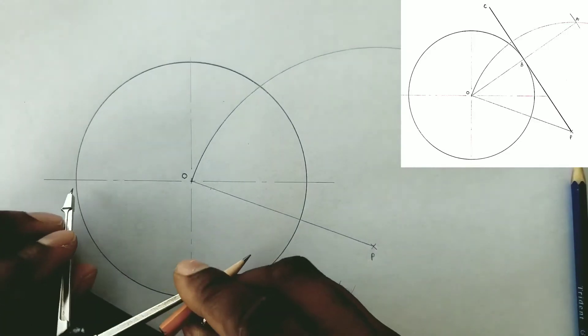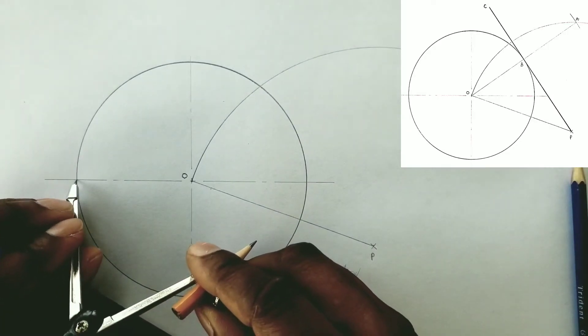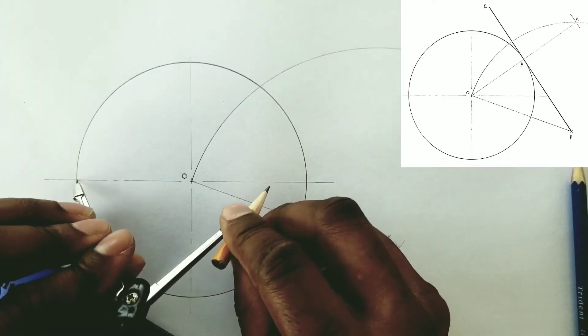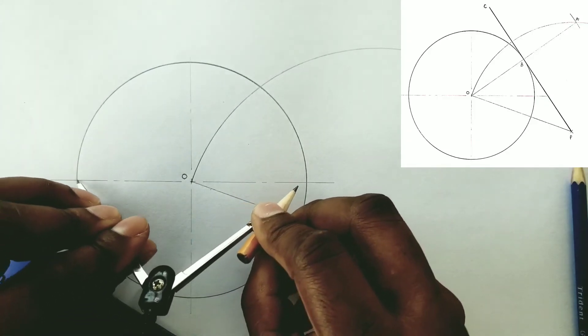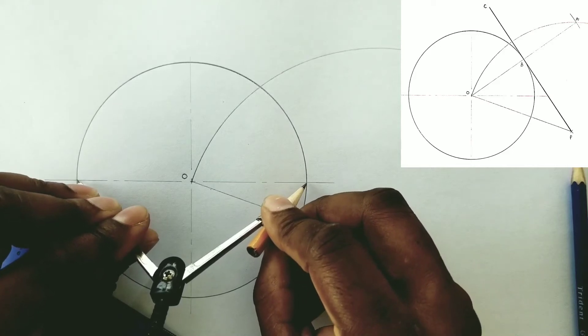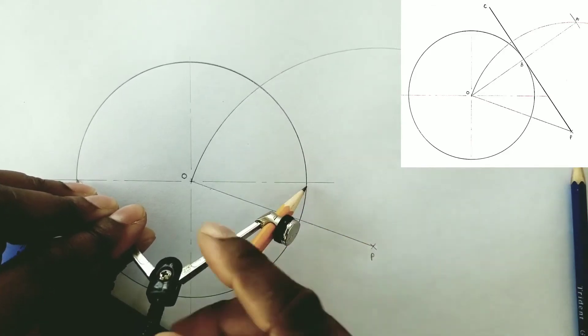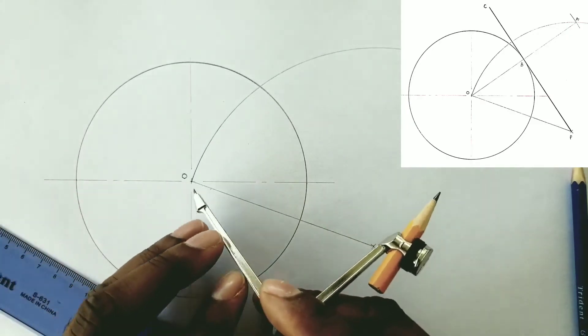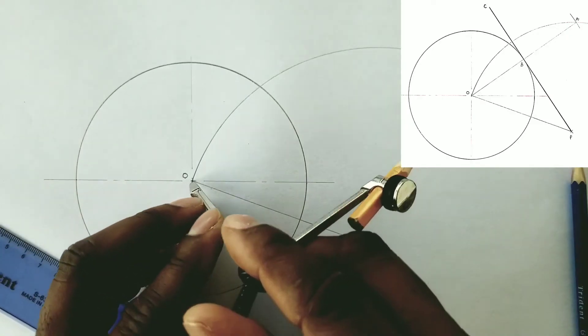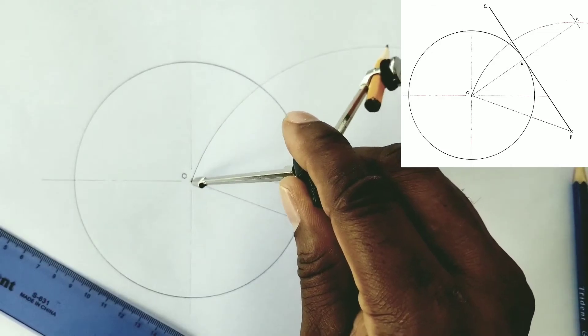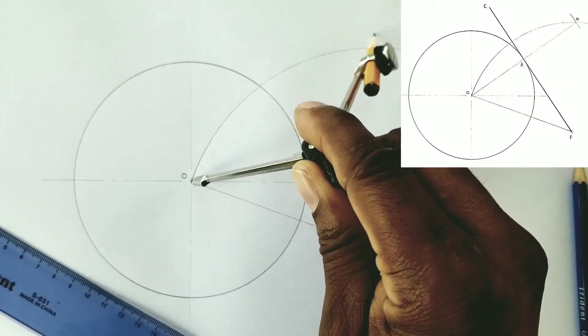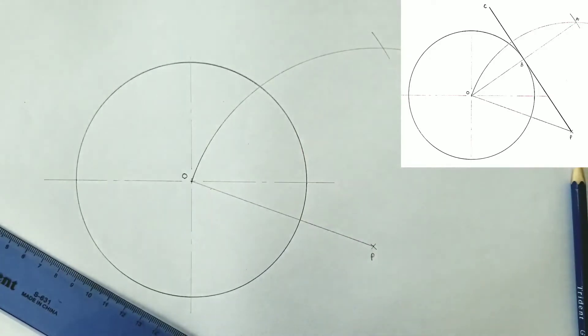Now with your compass opened to the diameter of the circle, we will then put our compass point at O and scribe an arc to intersect the first arc. This will give us point A.